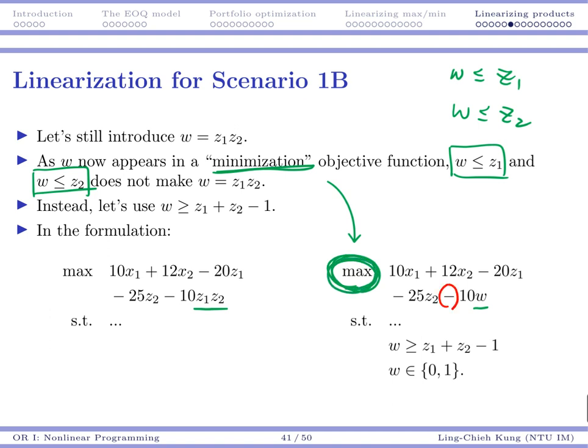But because this is a negation, there is a negative term there. So maximizing negative 10w is equal to minimizing 10w. That's why here I say w appears in a minimization objective function.